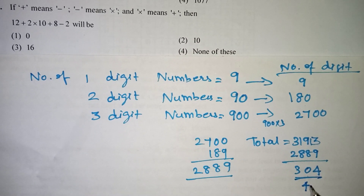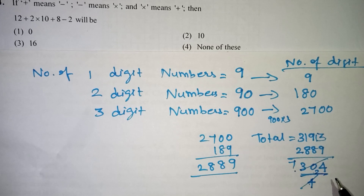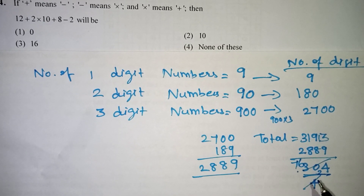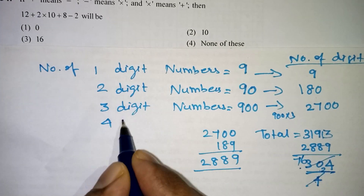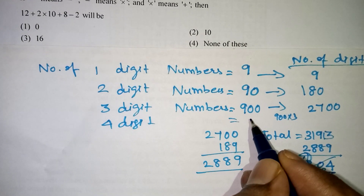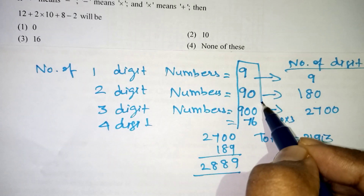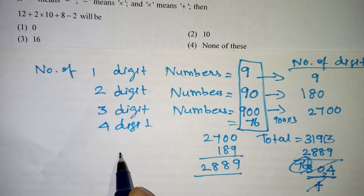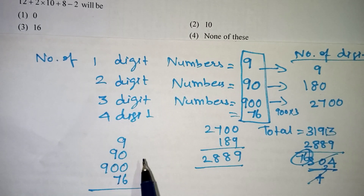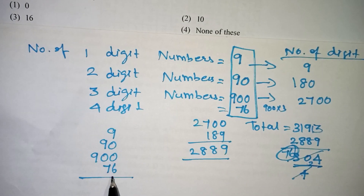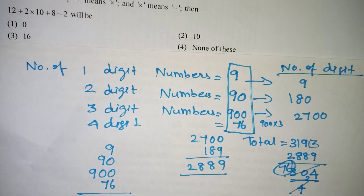76 four-digit numbers will be printed. So the total pages: 1-digit numbers = 9, 2-digit numbers = 90, 3-digit numbers = 900, 4-digit numbers = 76. Total pages = 9 + 90 + 900 + 76 = 1075 pages. So 1075 pages will be in the book. The answer is the second option.